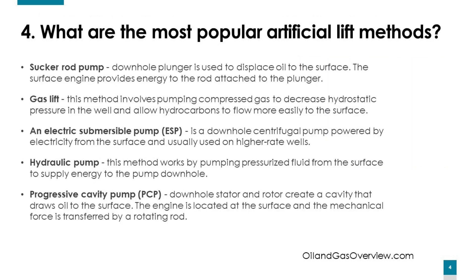What are the most popular artificial lift methods? The first one is sucker rod pump. A downhole plunger is used to displace oil to the surface; the surface engine provides energy to the rod attached to the plunger. Gas lift involves pumping compressed gas to decrease hydrostatic pressure in the well and allow hydrocarbons to flow more easily to the surface. An electric submersible pump, or ESP, is a downhole centrifugal pump powered by electricity from the surface, usually used on higher-rate wells.